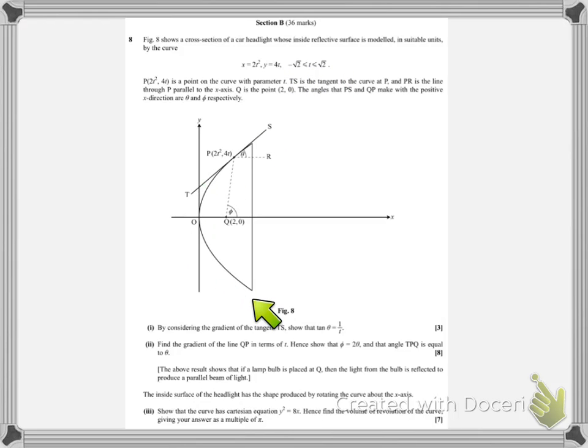So all this means is on this curve, any point on the curve has got a t-value and then an x-coordinate which is 2 multiplied by the t-value squared, and a y-coordinate which is 4 multiplied by the t-value. So we're going to do something considering gradients and tangents, get something with tan theta, and then some other things with angles, possibly double angle formula coming in here, and eventually finding a volume of revolution.